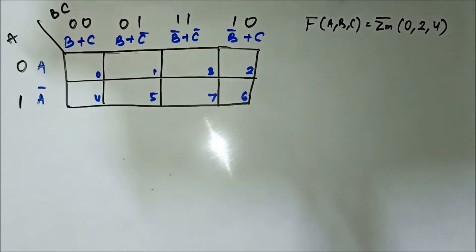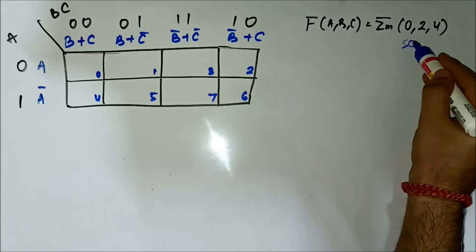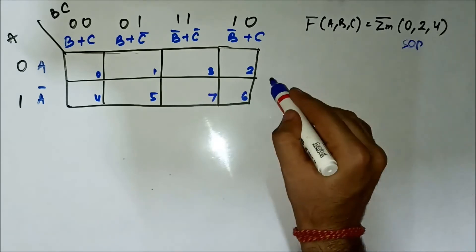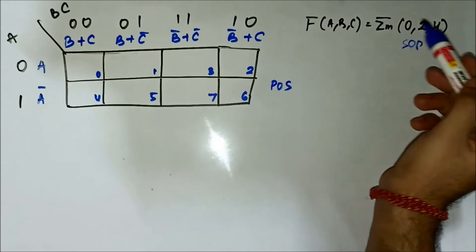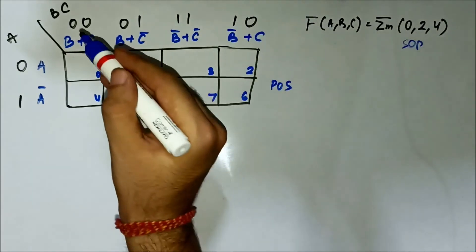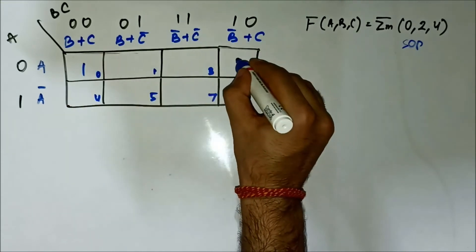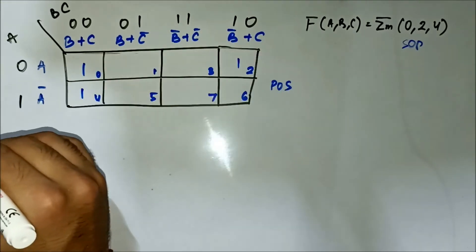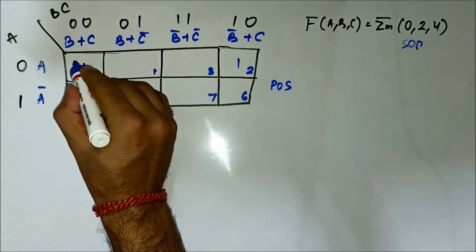This is the fourth question related to implementation of SOP expressions using POS KMAP. Here we have the SOP expression with minterm values 0, 2, and 4, so we map it. Two pairs will be formed.